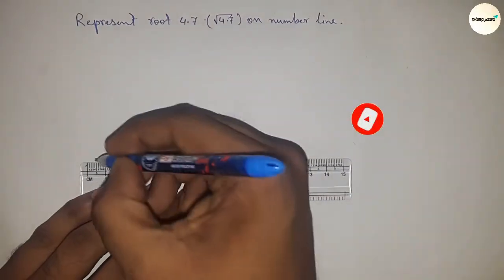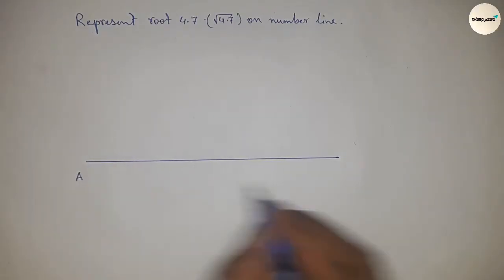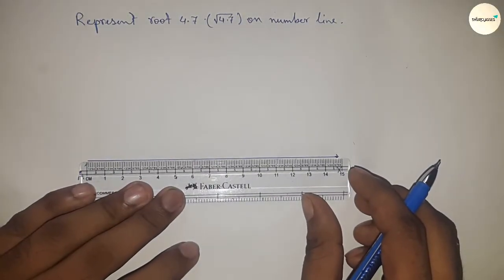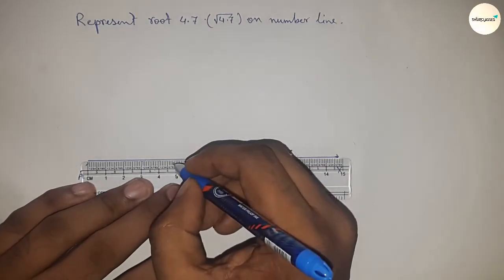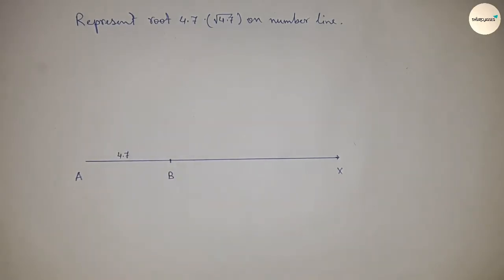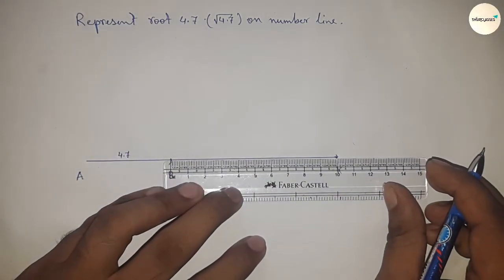First, draw a line of any length - this is the AX line. Next, take a distance of 4.7 centimeters and mark point B, so AB equals 4.7 centimeters.